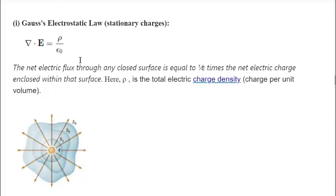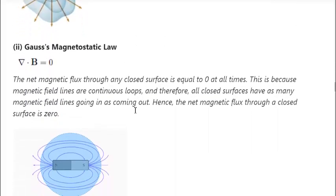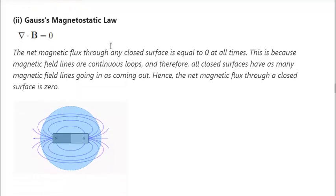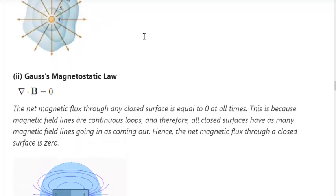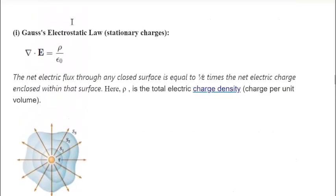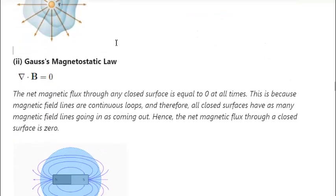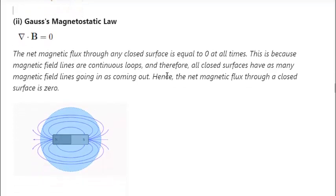Basically, if the charge density changes then the flux will also change. Now we're going to talk about what I'll call Gauss's magnetostatic law. This is distinct from the electrostatic law, and I call it the magnetostatic law because really this is about magnets that are not in motion. This law states that the net magnetic flux through any closed surface is equal to zero at all times.